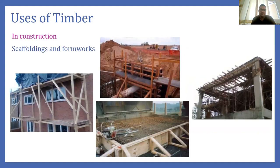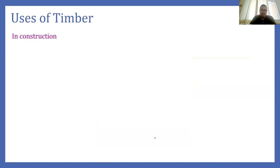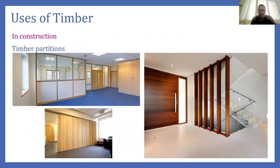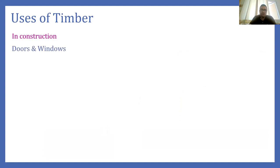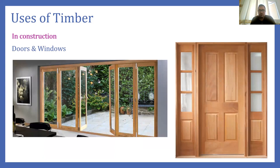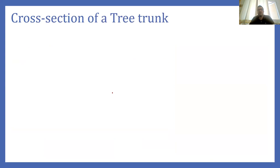Timber can also be used in scaffolding and formworks. When we construct buildings, we use scaffolding to support labor. For constructing concrete elements we use formworks so that the elements take a proper shape. Timber can also be used as a partition wall to segregate spaces, and in doors and windows. Timber is also used in furniture. So there are various uses of timber.